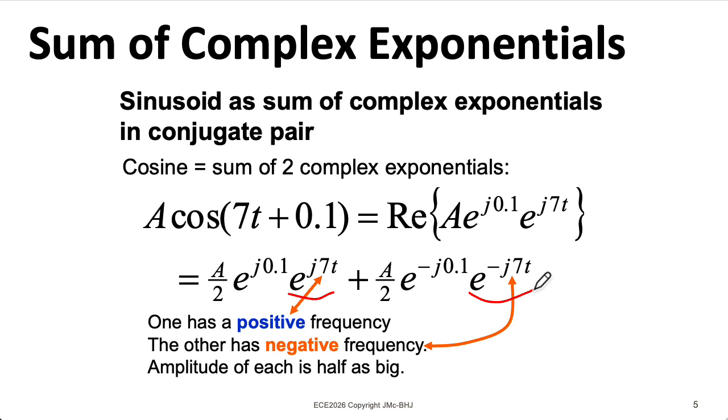We can rewrite this using that inverse Euler's formula as a sum of two complex exponentials, the first representing that vector spinning counterclockwise, and the second representing the vector spinning clockwise. Now, according to the way that formula works, I can take the phase, this 0.1, and put it here. But then I put a minus 0.1 here. And also, according to the formula, I take that amplitude and divide it by 2.